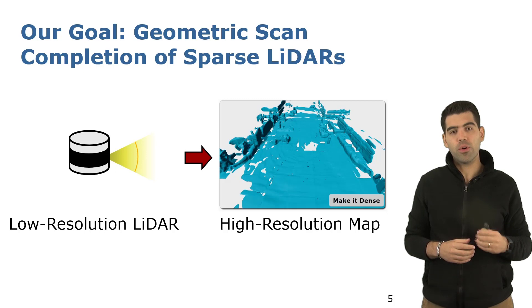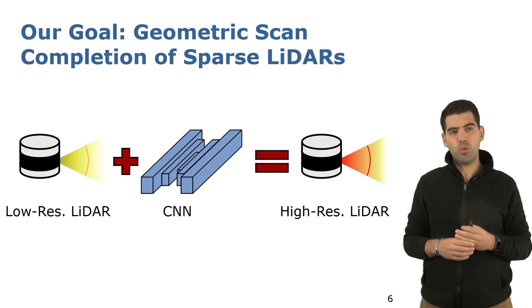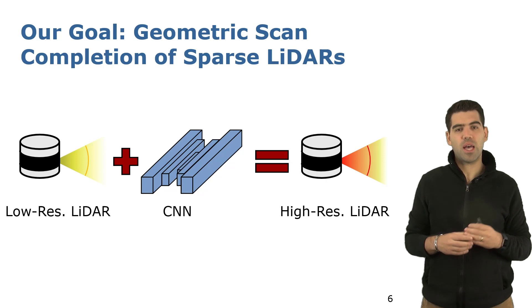To do so, we revisit the traditional volumetric pipeline based on TSDF and propose a neural network to aid the 3D reconstruction. Our solution provides maps with similar characteristics as those built with more high-end sensors, which are typically more expensive.